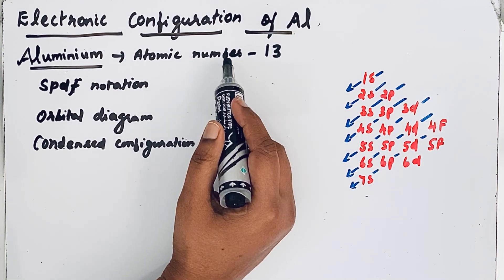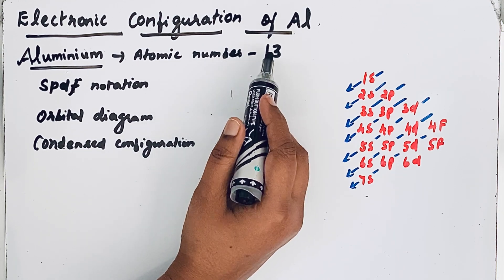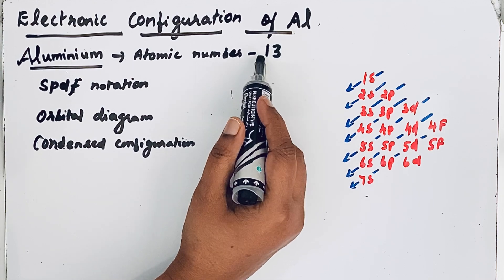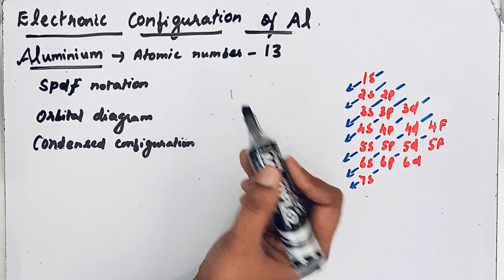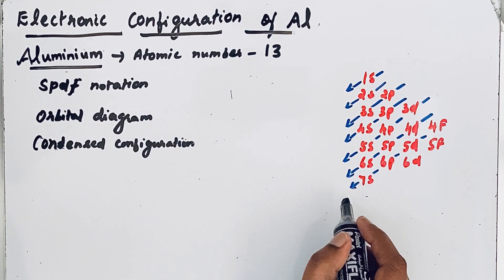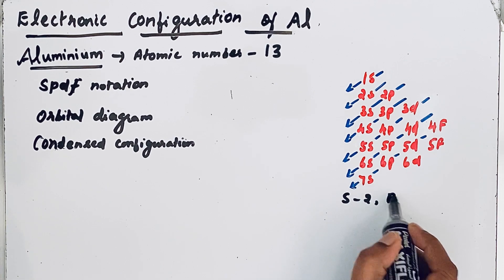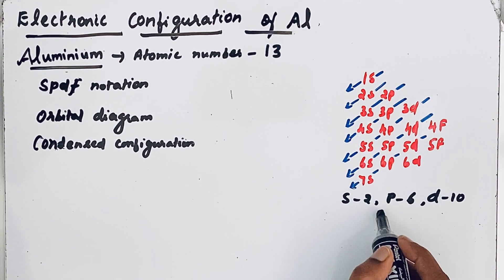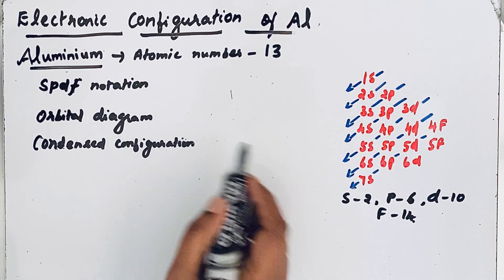Since aluminium is a neutral atom, the number of protons equals the number of electrons, which equals the atomic number. So 13 electrons are present in aluminium. The maximum number of electrons in the s orbital is 2, in p orbital 6, in d orbital 10, and in f orbital 14.